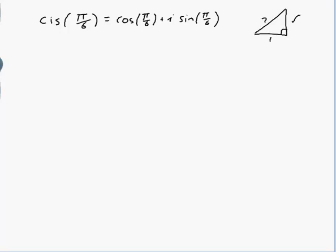Let's do the first one. Cis of pi on 6 equals cos of pi on 6 plus i sine of pi on 6. Pi on 6 is here. So cos of pi on 6 would be root 3 on 2. Sine of pi on 6 would be a half. So root 3 on 2 plus a half of i. So that's good.